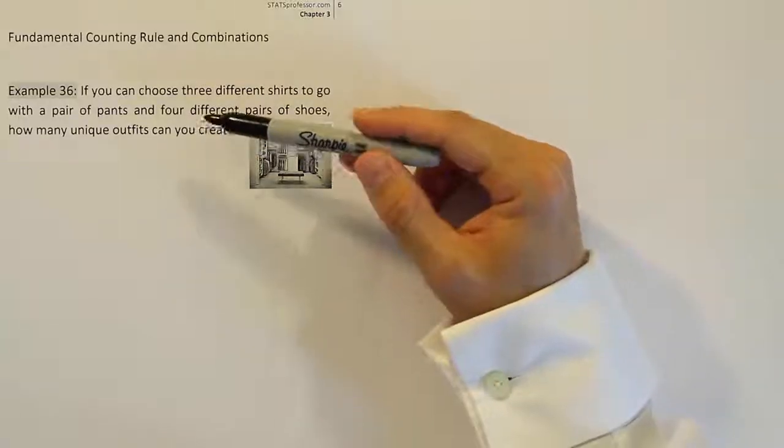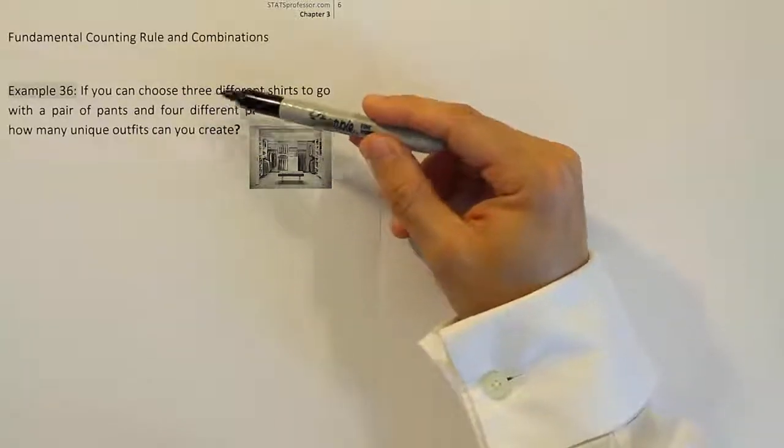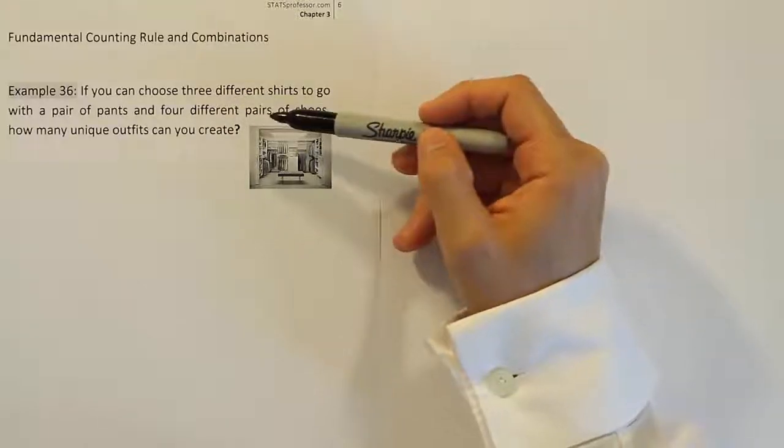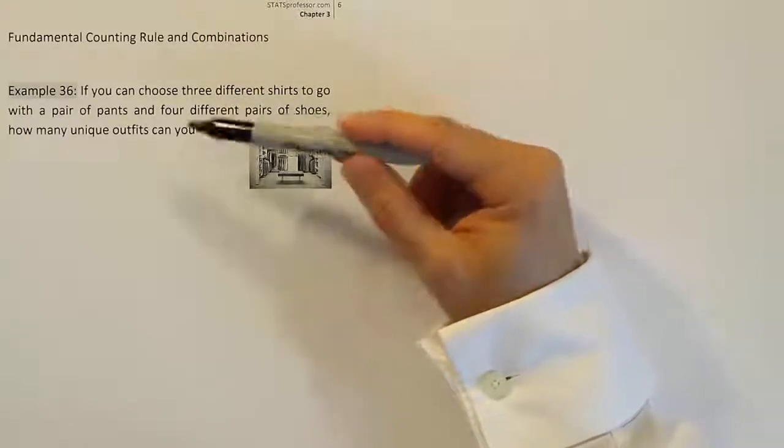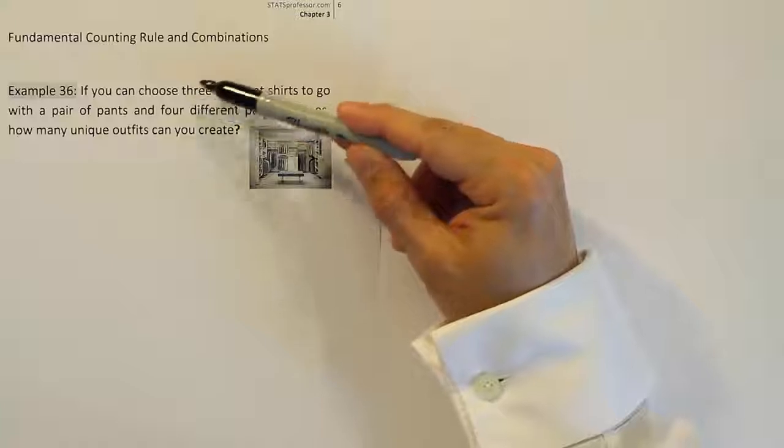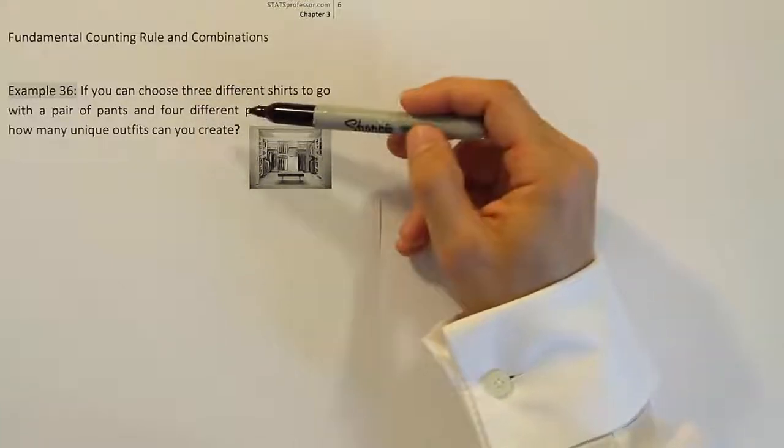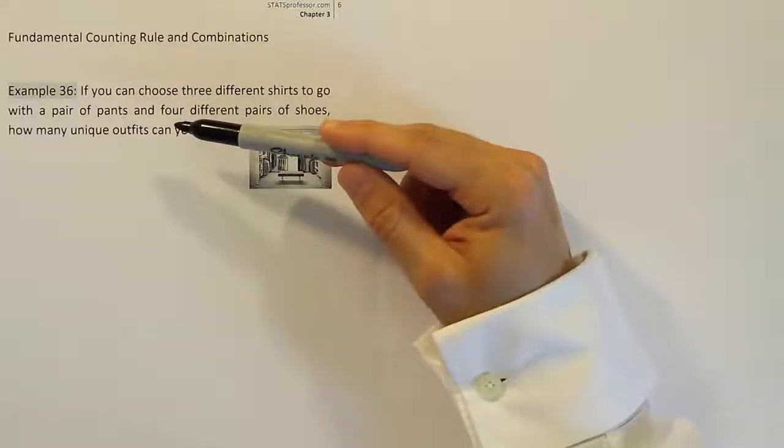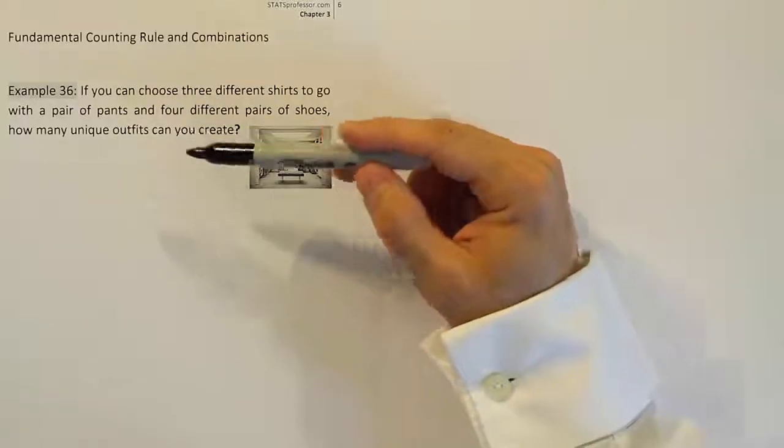Now, it says a pair of pants, meaning there's a pair of pants that matches any of three shirts or any of four different pairs of shoes. So for whatever reason, any one of these shirts can go with any one of these shoes and the pair of pants that you've picked out. So the pants really isn't a choice because it implies there's just one pair of pants, so we don't have to worry about that.